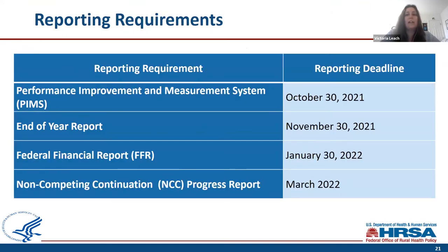Here are your upcoming reporting requirements. To complete the FY2020 year, you have a Performance Improvement and Measurement System (PIMS) report due October 30th, an end-of-year report due November 30th, and a Federal Financial Report (FFR) due January 30th, 2022. You can then expect to see the fourth year NCC progress report coming out around the same time in March of 2022.